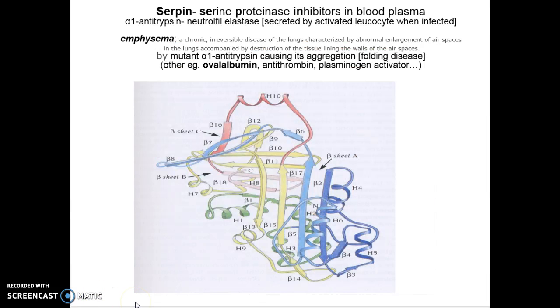Next example will be serpins. Infections in the lung elicit an accumulation of activated leukocytes that secrete enzymes involved in removing the damage from the infection. The neutrophil elastase is such an enzyme. The proper control of activity of this enzyme could be done by a protease inhibitor named alpha-1-antitrypsin. Alpha-1-antitrypsin belongs to a family of serine protease inhibitors found in the blood plasma that are collectively called serpins.